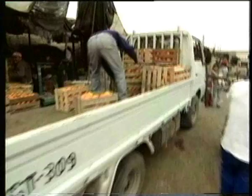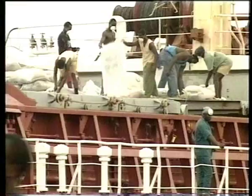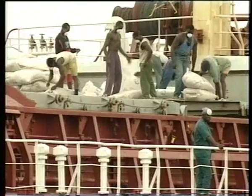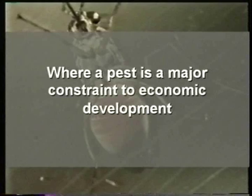Low pest prevalence areas can be established with suppressive releases of sterile insects, followed by post-harvest treatments. Alternatively, if pest eradication is feasible using the SIT, pest-free areas can be created from which commodities can be exported freely. And where a pest is a major constraint to economic development, such as the vector of an animal disease, and other sustainable control methods are not available.